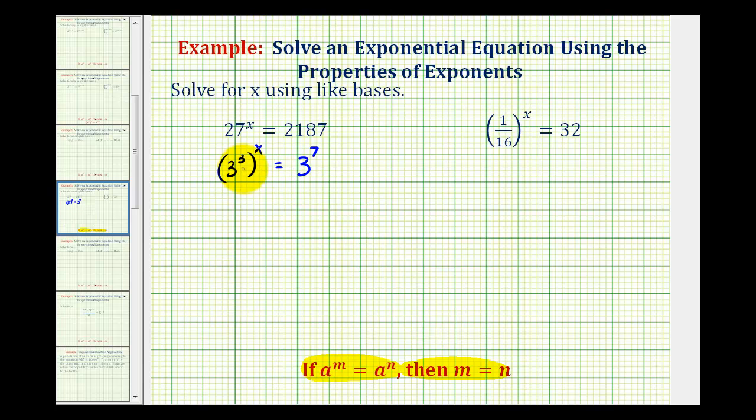Now we do have a common base, but notice on the left side we have a power raised to a power, and the rule is that we can multiply these exponents. So we can write this as 3 raised to the power of 3x equals 3 to the 7th. In this form, since these are equal and the bases are the same, we know that 3x must equal 7.